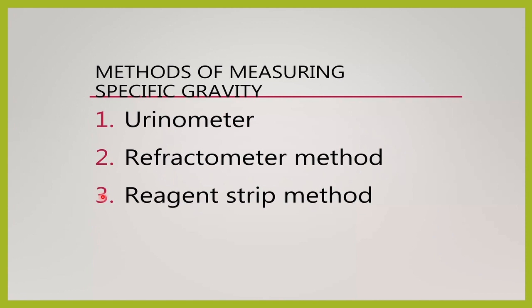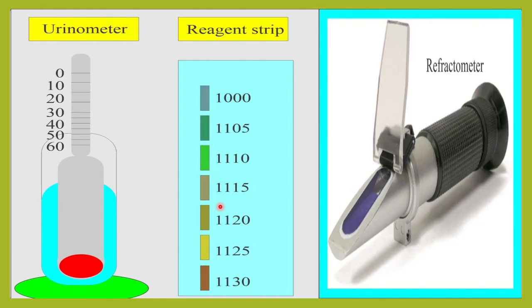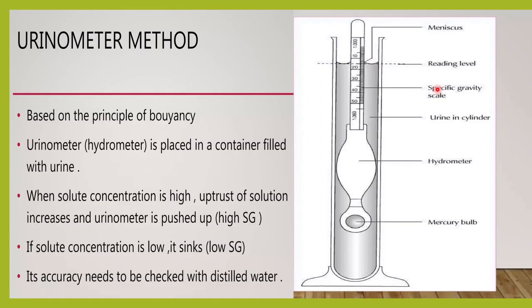What are the methods to measure specific gravity? Earlier we had the urinometer. There is a refractometer method also. And nowadays we use the reagent strip method. So this is a urinometer, this is a reagent strip, and this is a refractometer.